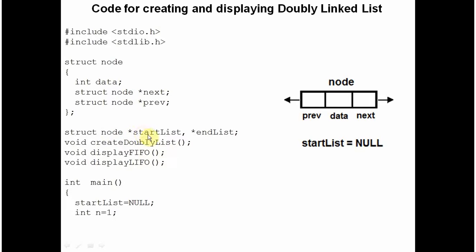I am assuming two global pointers: start_list and end_list. By the name only, it is clear that start_list will point to the first node of the double linked list, and through this pointer we will be traversing the linked list in FIFO — first in, first out — direction. And end_list will point to the last node in the double linked list, and through this we will traverse the double linked list in LIFO — last in, first out — direction, that is in reverse order.